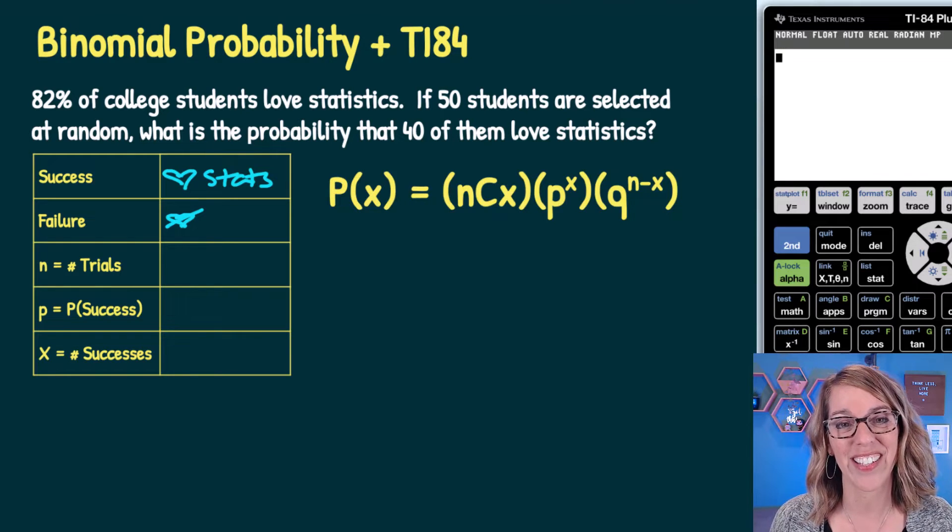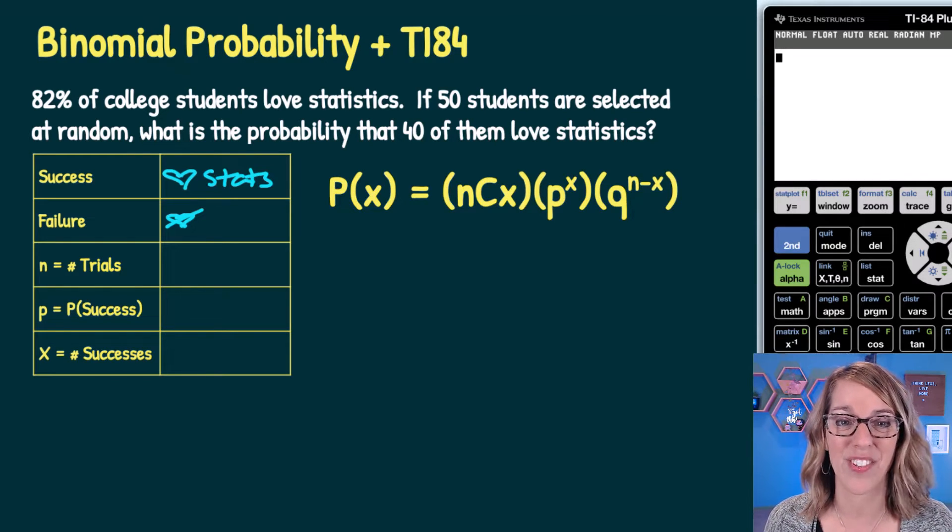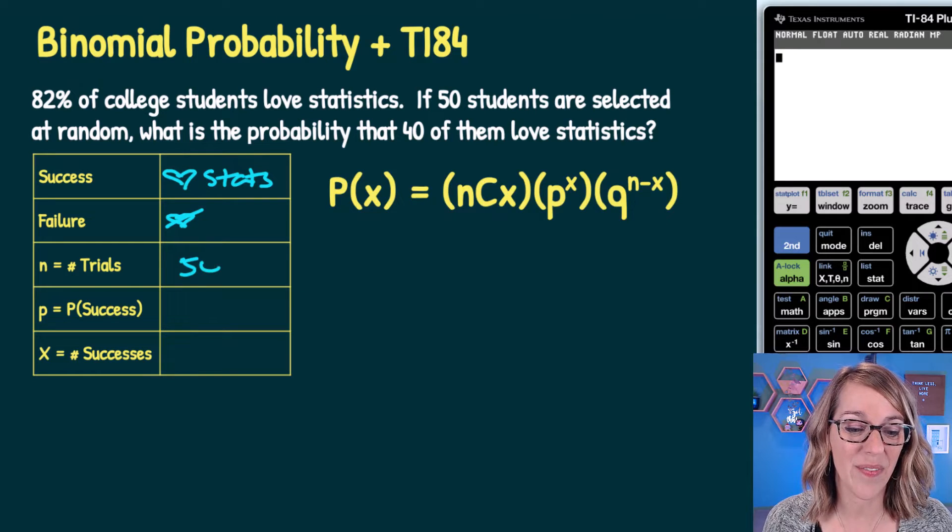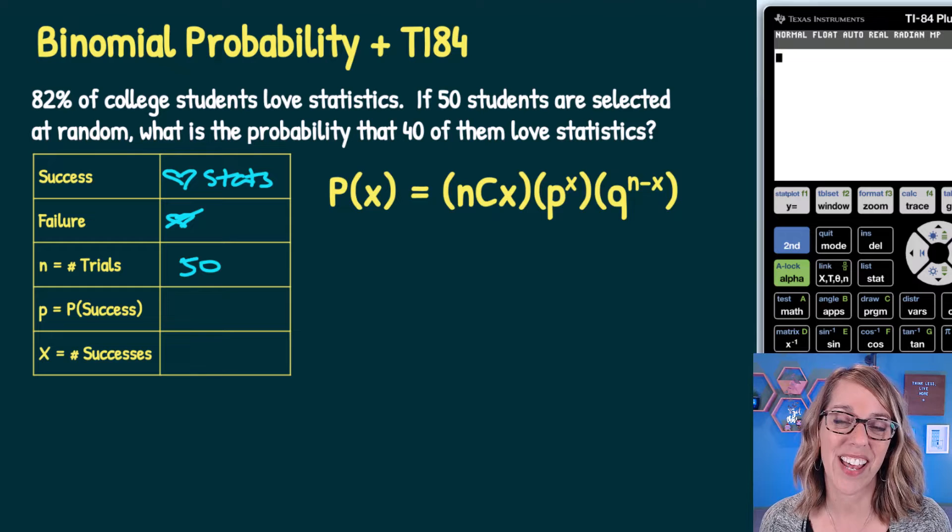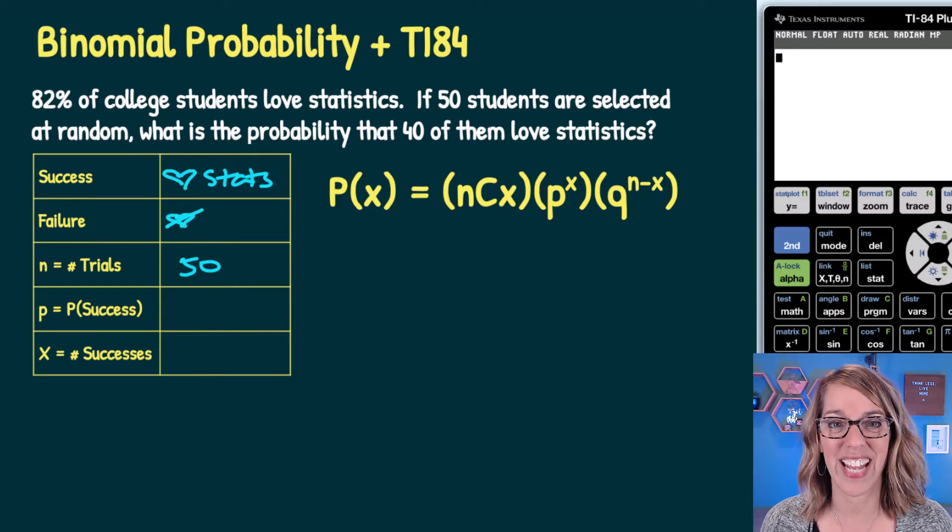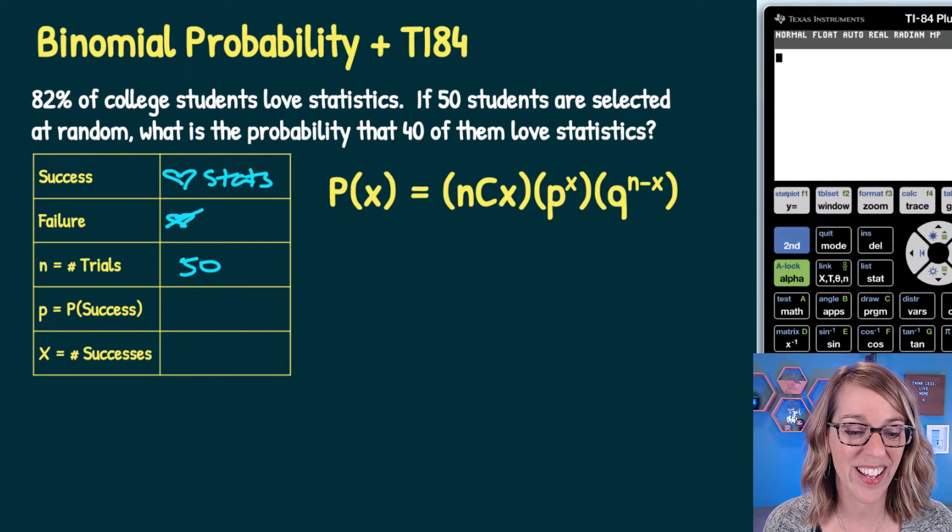n is the number of trials. In this case, a trial is asking an individual student, so the number of trials is 50. The probability of a success, P, is the 82% chance that any one student loves stats, so that's 0.82.